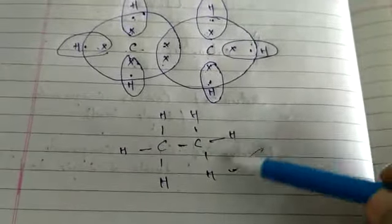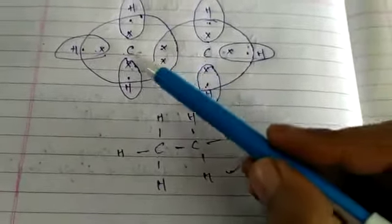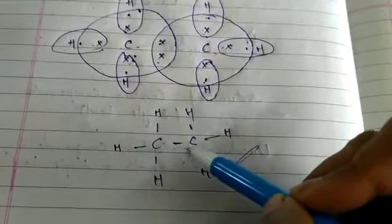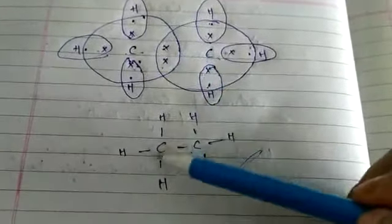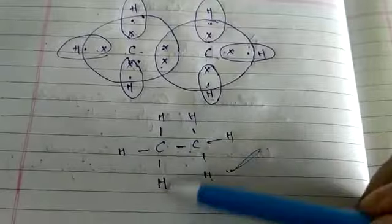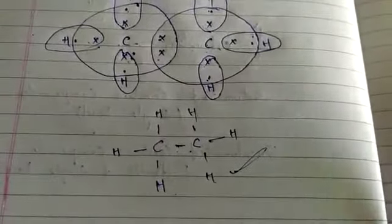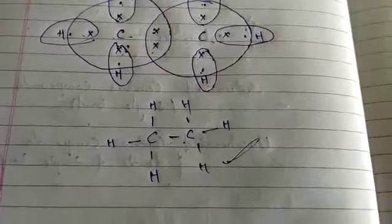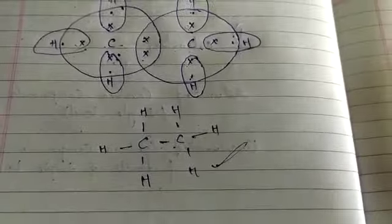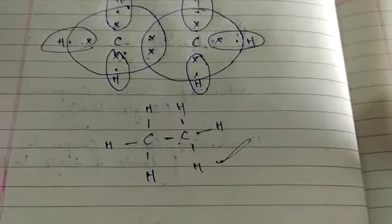Along with the electron dot structure, you can write the structure of ethane as two carbon atoms linked by a single bond, with each carbon atom bonded to three hydrogen atoms. This is the structure of ethane. Similarly, you can draw the structure of propane or butane on your own at home. In the next class, we will discuss about the unsaturated carbon compounds.